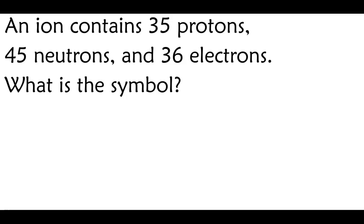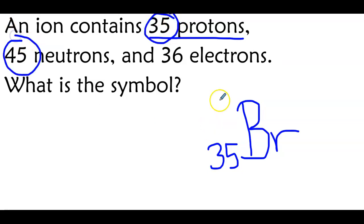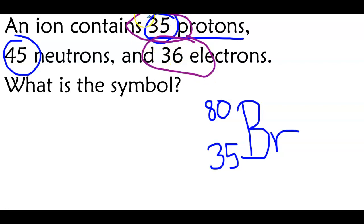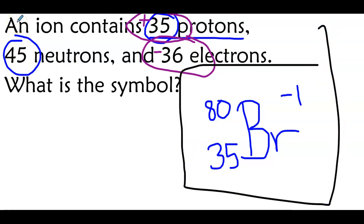Last one, and then we're all done. If I look up 35 protons on the periodic table, I come up with bromine. The atomic number is 35 and goes at the bottom left. I add protons plus neutrons to get a mass number of 80, which goes at the top left. Then I compare electrons and protons to get my charge: a positive 35 protons and a negative 36 electrons — so plus 35 plus negative 36 equals a negative 1 charge for bromine. This would be the symbol for this element. I hope this 18-minute summary does the job for you — let me know if you have any questions.